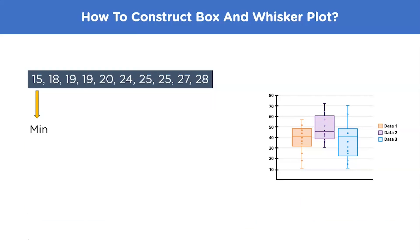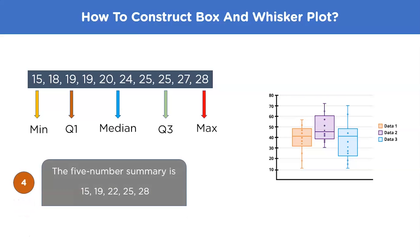So our five number summary will look like this. The minimum value is 15, the Q1 is 19, the median which is also the Q2 is 22, and the upper half median is 25, and finally the maximum value which is 28. Now we have all the required values to make a box plot. So let's go ahead and create one.